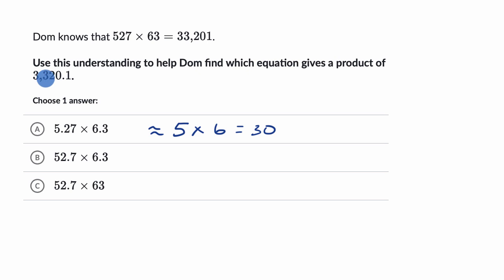Well, 30 is nowhere close to 3,300 and something. If I were to say this is approximately 50 times 6, that's equal to 300. 300 is still off by more than a factor of 10.